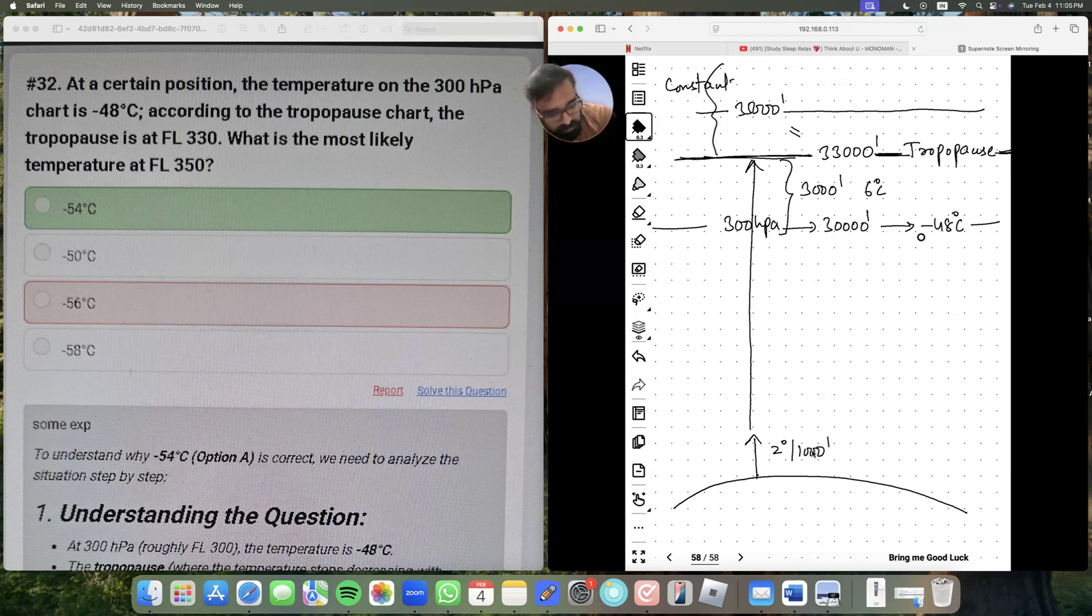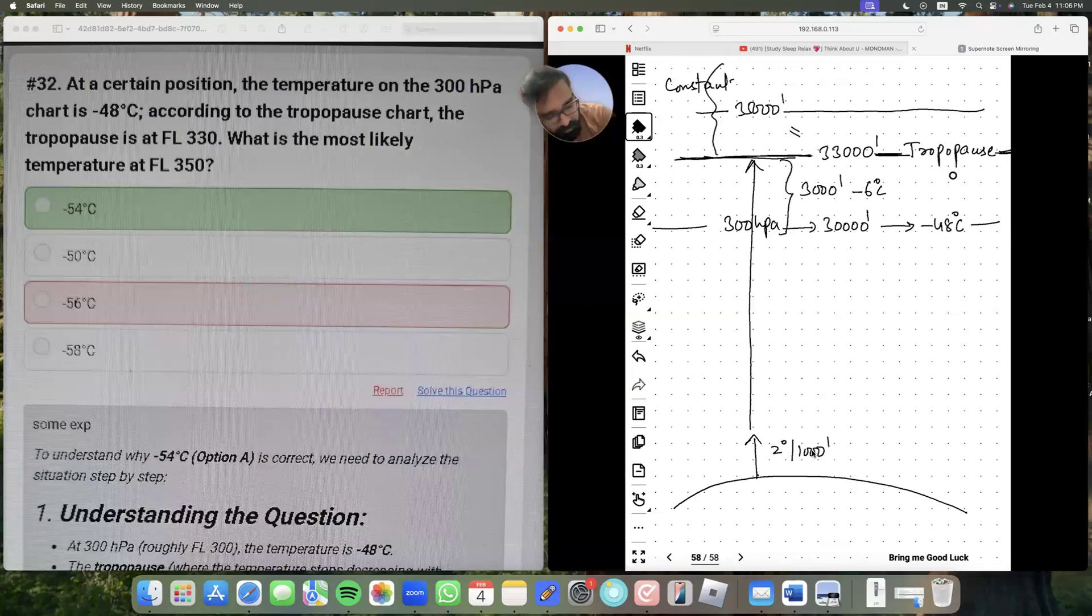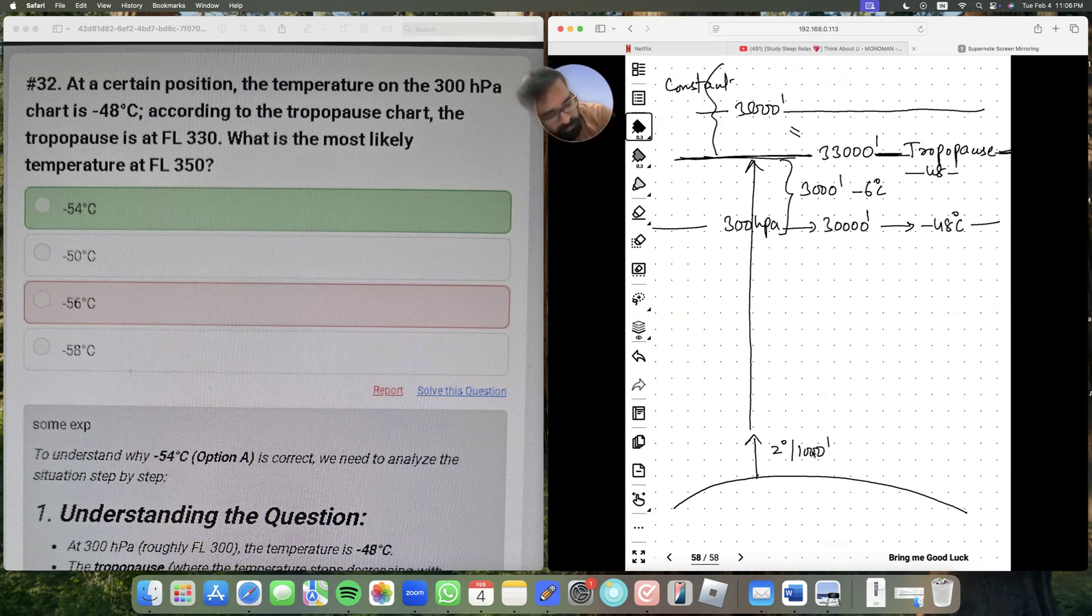So the temperature is minus 48. The temperature will fall by 6 degrees centigrade. So temperature at 33,000 would be minus 48 minus 6, that is minus 54 degrees centigrade. So the temperature at tropopause is minus 54. Now because it is same at 33,000 feet and 35,000 feet, the answer will still be minus 54 degrees centigrade.